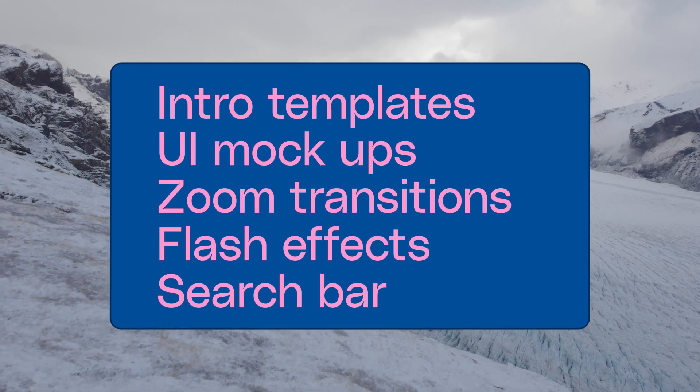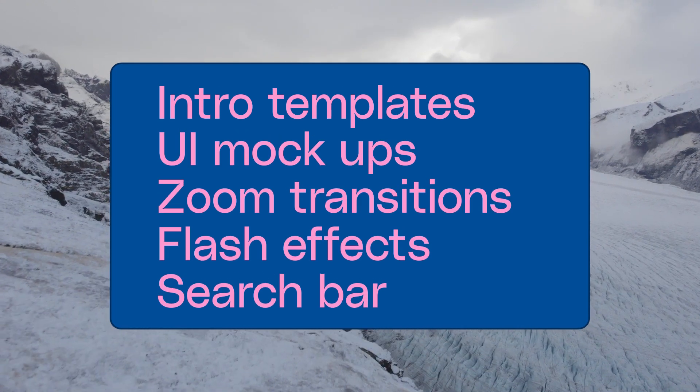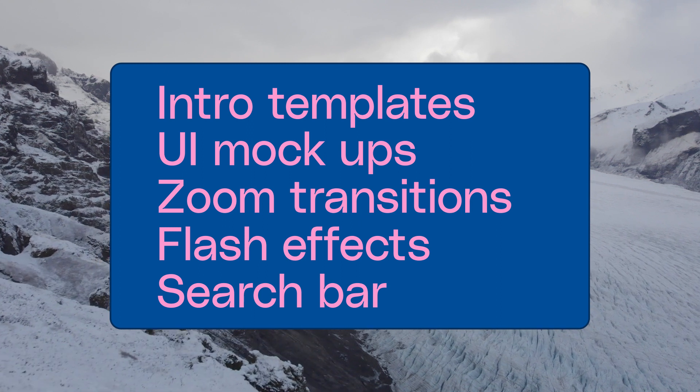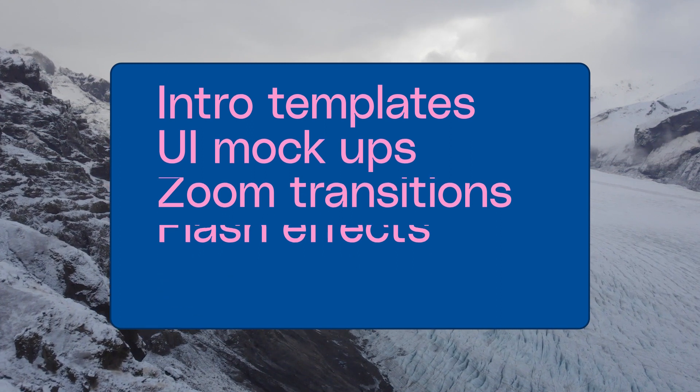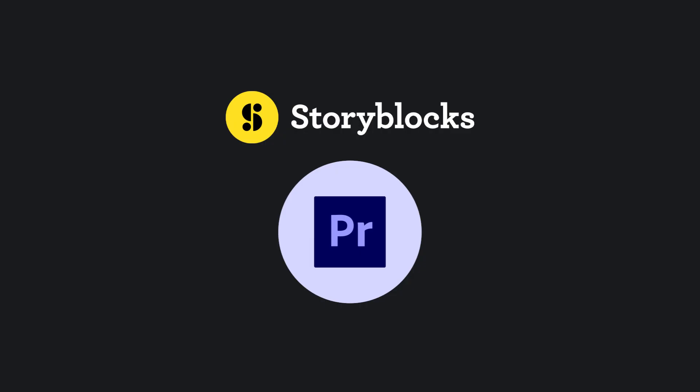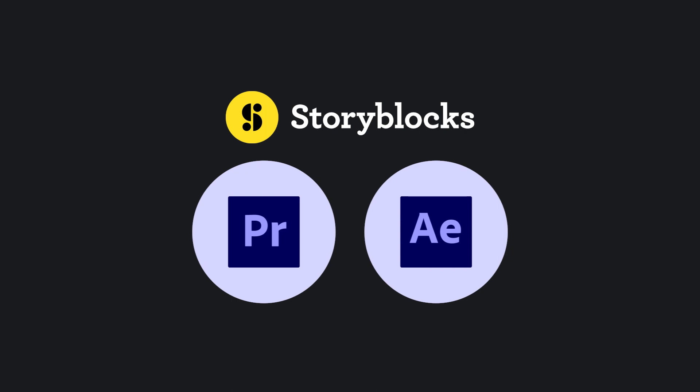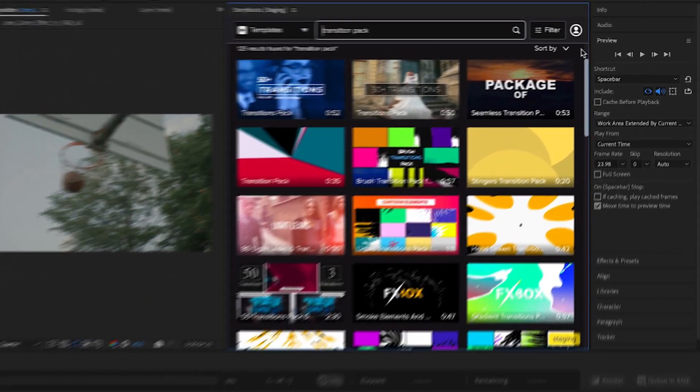Stock templates for After Effects can play a crucial role in elevating your videos and keeping your post-production efficient. But sifting through thousands of templates to find one that will work for you feels overwhelming, right? You're not alone. That's why in this video I'm going to showcase five of the most useful After Effects templates in the Storyblocks library and how you can customize them for your next video project. To help speed up the template editing process, I'm going to use the Storyblocks plugin for Adobe Creative Cloud, which allows me to access the entire Storyblocks library directly within After Effects and Premiere Pro.